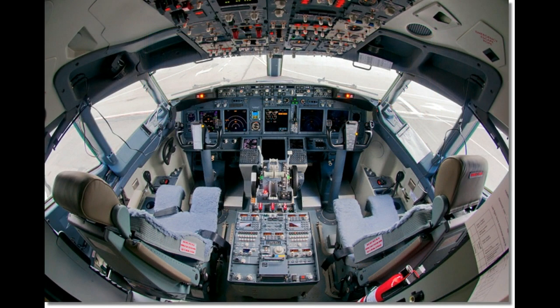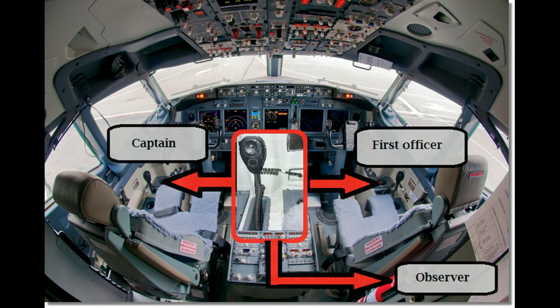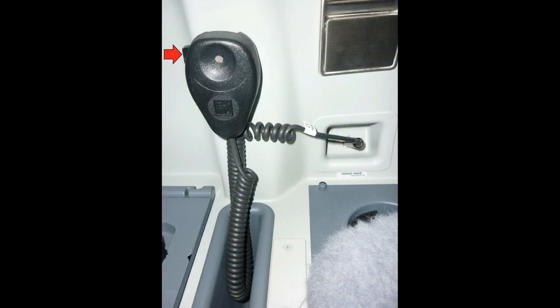There are actually three different ways you can talk on the interphone. You have a hand mic, a boom mic, and an oxygen mask. The captain, first officer, and observer all get their own hand mic. Additionally, the hand mic is actually the easiest way to use the interphone. Simply pick up the hand mic, press this button, and then talk into here.